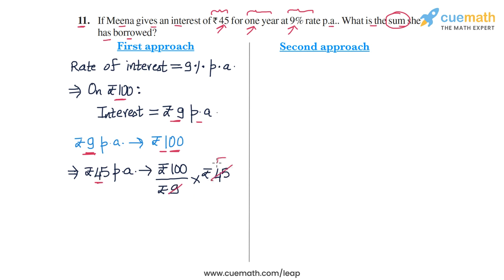So 45 by 9 is 5 and 100 into 5 is 500. This will give us rupees 500. And therefore, we conclude that the sum that Meena has borrowed is rupees 500.